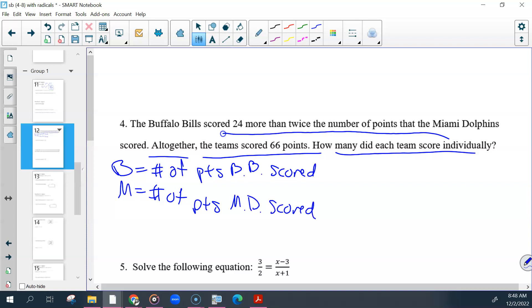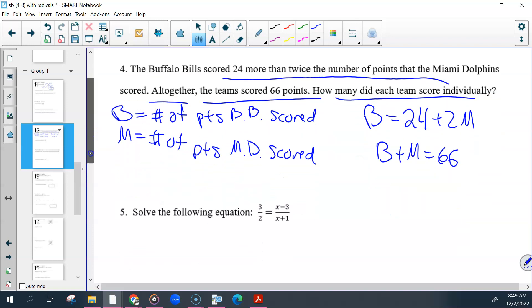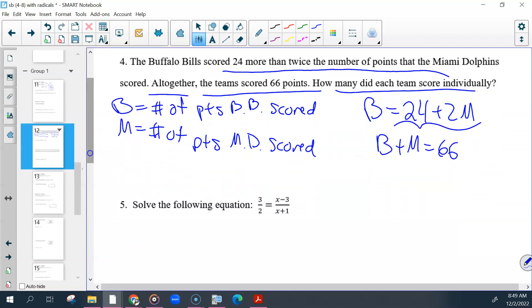Let's call them B and M for number of points Buffalo Bills scored and number of points Miami Dolphins scored. That first sentence is talking about the Buffalo Bills, so that's going to be B equals 24 plus 2M, or 2M plus 24 either or. So that would be your equation for B.